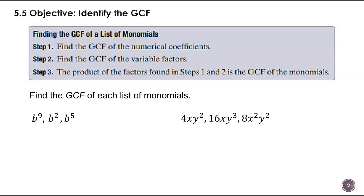On the first example, my numerical coefficients are all one, so we don't really have to worry about that — it's going to be a one. When we're looking at the variables, we have to look at what's the largest exponent that they all three have in common, which would be whatever the smallest exponent happens to be, because each of these has to be divisible by that variable with that particular exponent.